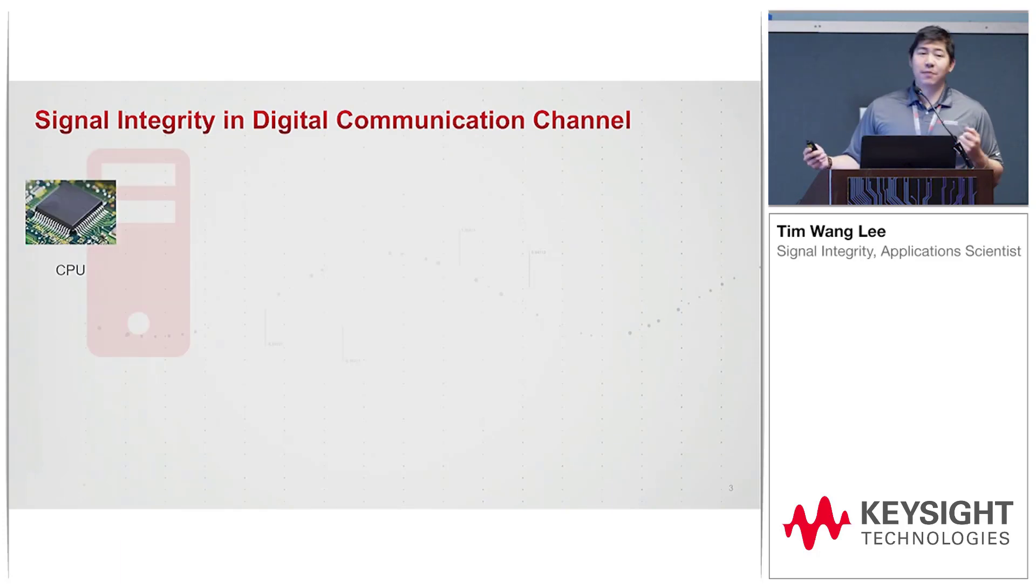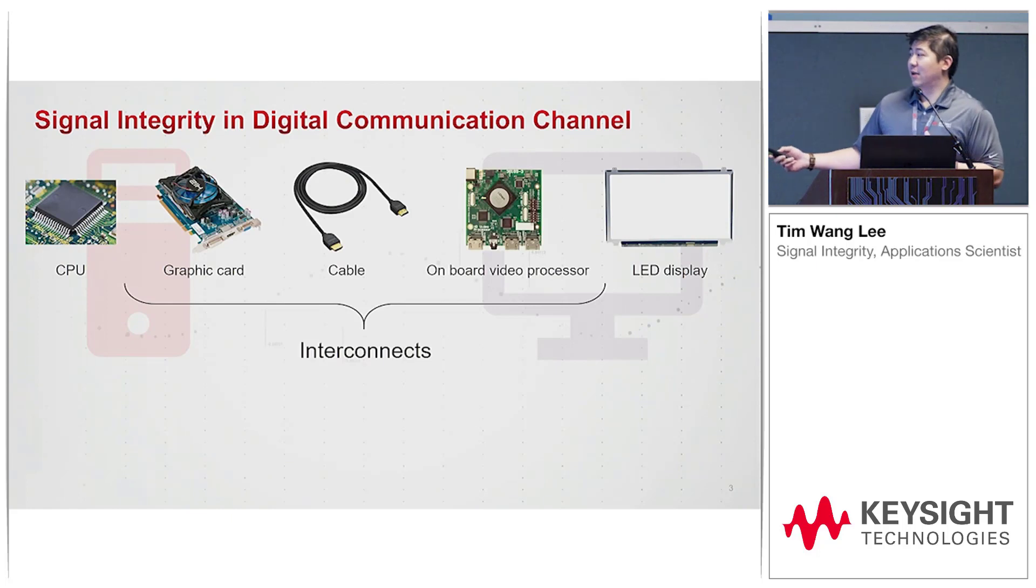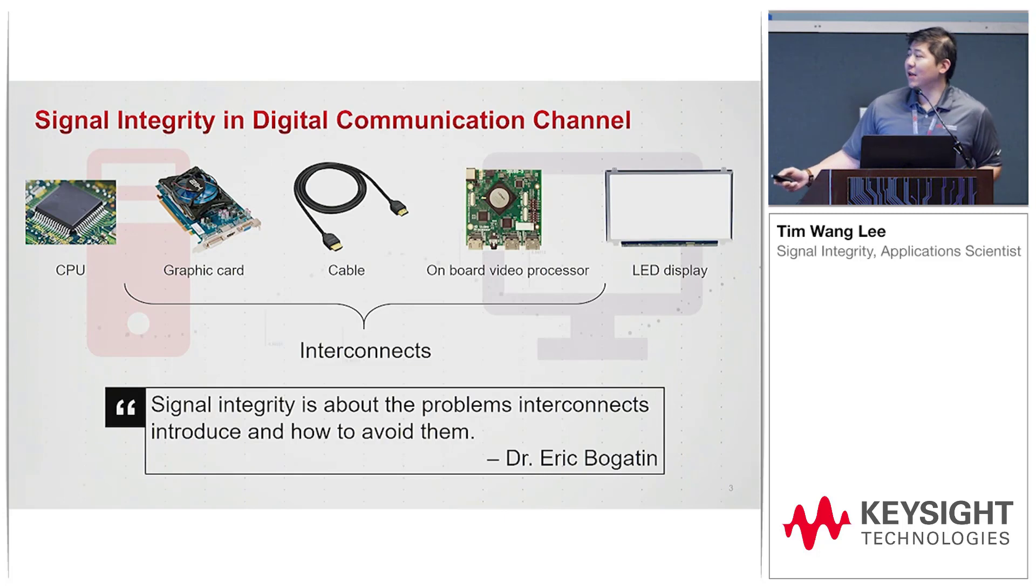Say we have a CPU trying to output some video to a monitor to the right. In between, my advisor Eric calls it the interconnect, and he summarizes really well in one sentence: signal integrity is about the problems interconnects introduce and how to avoid them. We'll use S-parameters.